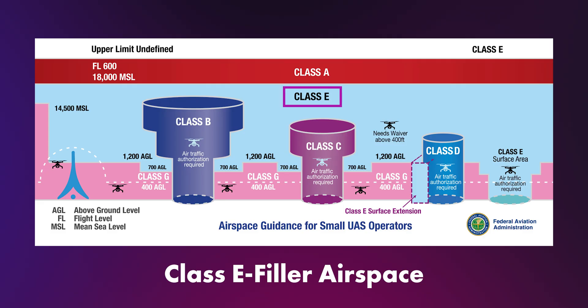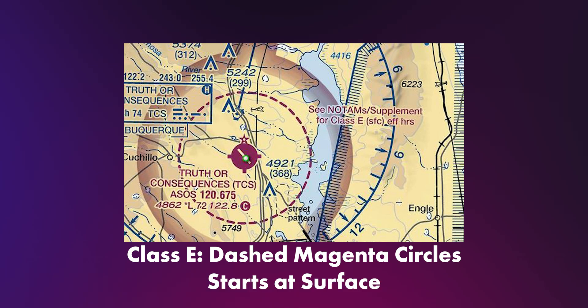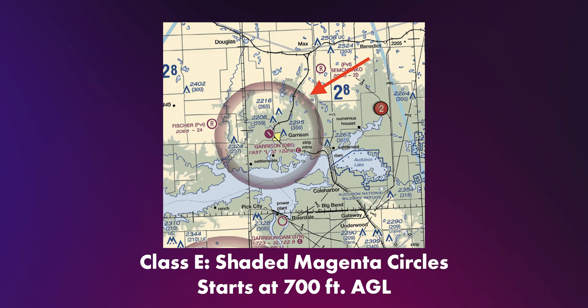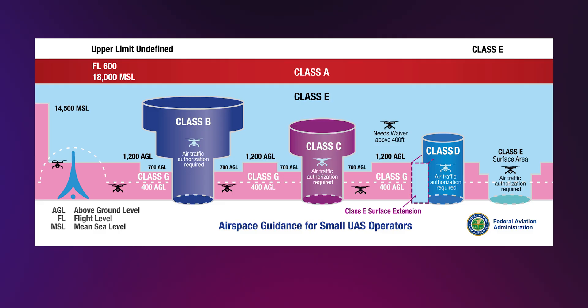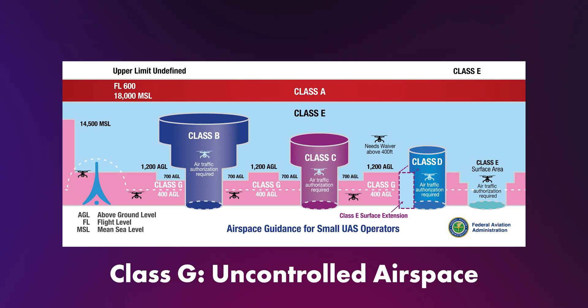Class E is the filler airspace and comes in a few forms. Dashed magenta lines mean it starts at the surface. Shaded magenta means it starts at 700 feet AGL. If you see no shading, it often starts at 1,200 feet AGL. Class G is the uncontrolled airspace — this is where most drone pilots fly. It's not marked on sectional charts. Typically it extends from the surface up to the base of Class E, filling the gaps until Class E begins.